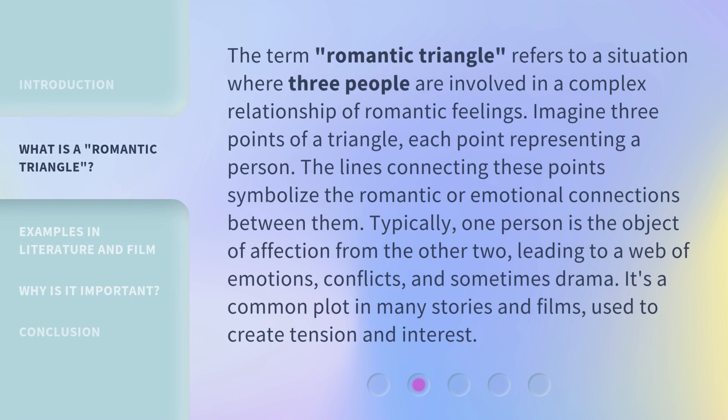The term Romantic Triangle refers to a situation where three people are involved in a complex relationship of romantic feelings. Imagine three points of a triangle, each point representing a person. The lines connecting these points symbolize the romantic or emotional connections between them. Typically, one person is the object of affection from the other two, leading to a web of emotions, conflicts, and sometimes drama. It's a common plot in many stories and films, used to create tension and interest.